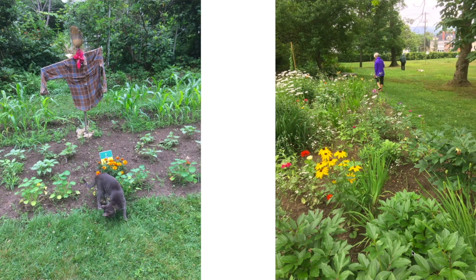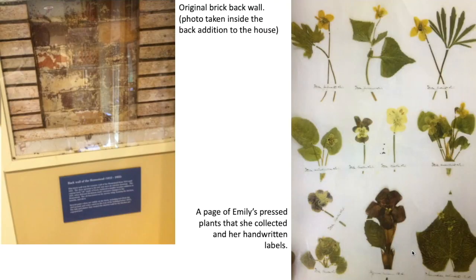Outside of the house you'll still find gardens, which was one of her main uses of her time. Besides writing, she loved plants and the animals she would find in the gardens. She kept collections of different plants she would find. As you read her writing, you'll see that nature is a huge part of it. The gardens are still maintained on the property. One of the neatest things I saw when I visited was one of the original pages of her pressed plants — that's Emily's own handwriting identifying the plants she had collected and placed into a notebook with hundreds of others.